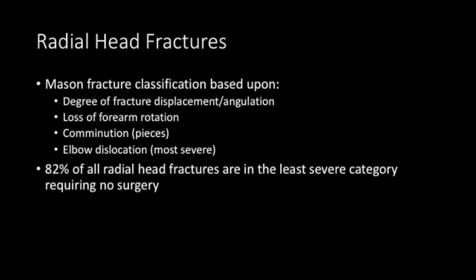There is a classification for radial head fractures: the Mason classification, which is based on degree of fracture displacement, loss of rotation, comminution, and elbow dislocation. 82% of all radial head fractures are in the least severe category, requiring no surgery.